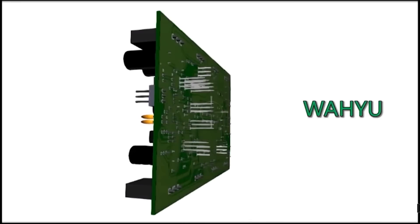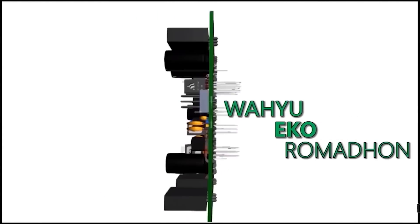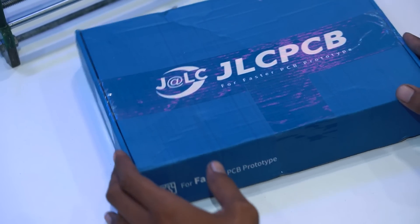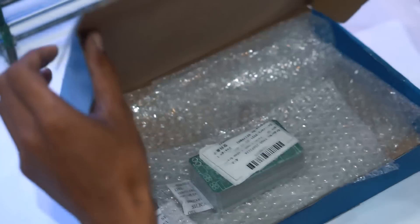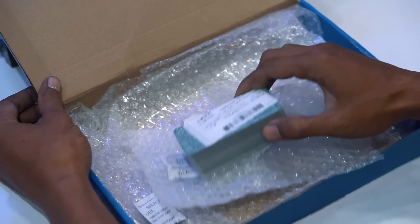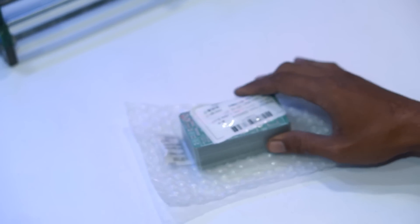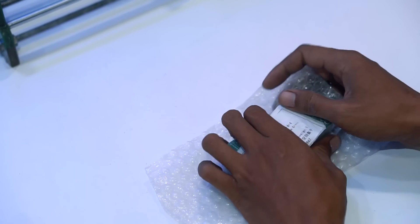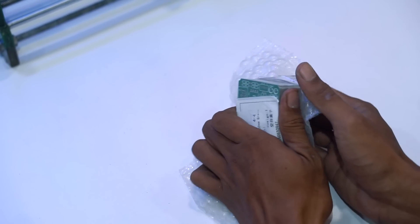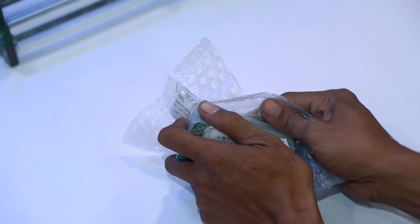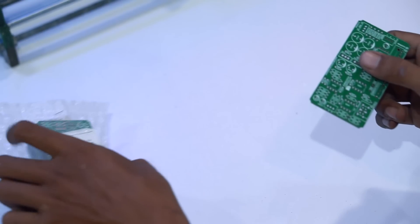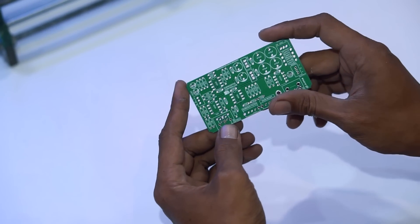Hello guys, in this video I will make a subwoofer controller kit circuit. This kit functions to filter audio signals, and the filtered signal is only at low frequency or bass tones. In addition, this circuit also has additional features to adjust frequency, subsonic filter, bass booster, and gain.